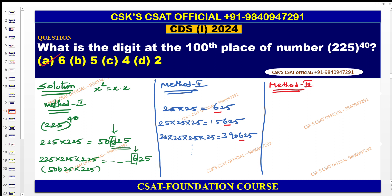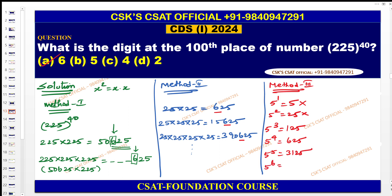Method 3 uses the unit-place concept. Consider powers of 5: 5¹ = 5, 5² = 25, 5³ = 125, 5⁴ = 625, 5⁵ = 3125, 5⁶ = 15625, 5⁷ = 78125 (approximately), 5⁸ = 390625. Observe the hundreds digit in each of these values.